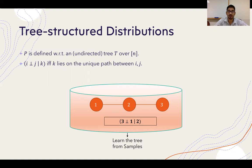In this distribution p, for any three variables i, j, and k, variables i and j are conditionally independent given variable k if k lies on the unique path between i and j in the tree. In this tree, variable 2 lies between the unique path between 1 and 3. Therefore, variable 3 will be conditionally independent of variable 1 conditioned on variable 2. Given samples from such an unknown distribution, our goal is to recover this structure.